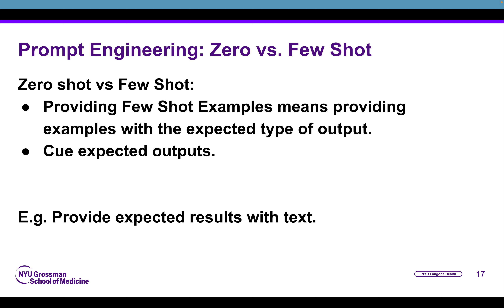Another common technique, perhaps slightly more advanced in prompt engineering, is the concept of few-shot learning. When we think of zero-shot, basically what we're saying is we're providing a prompt and expecting a result. With few-shot learning, we're providing a few examples with the expected output, and this can provide additional context for our AI to provide us with successful results.